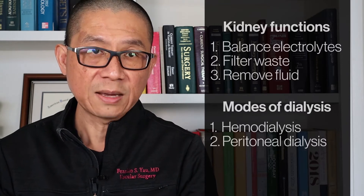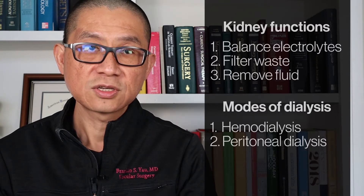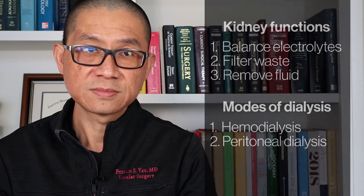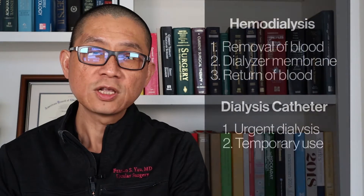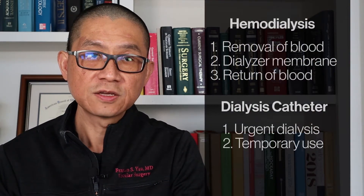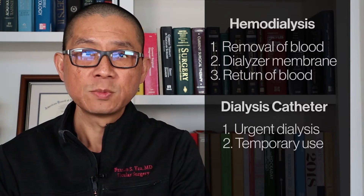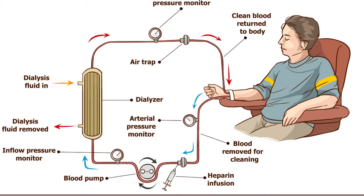There are two available types of dialysis: hemodialysis and peritoneal dialysis. Hemodialysis removes part of the blood from the body and utilizes a dialyzer membrane, or an artificial kidney, to filter the blood and return it to the body. To be able to do this, a surgical access has to be performed so that you can safely and sterilely remove the blood and return it to the body.